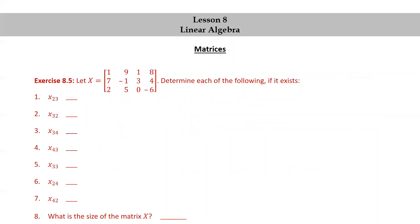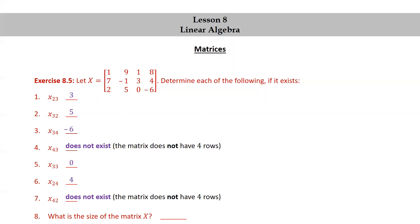Let's try an exercise. Let X = [1, 9, 1, 8; 7, -1, 3, 4; 2, 5, 0, -6]. Pause the video and determine each entry if it exists. X₂₃ = 3. X₃₂ = 5. X₃₄ = -6. X₄₃ does not exist — the matrix has only 3 rows. X₃₃ = 0. X₂₄ = 4. X₄₂ does not exist — again, the matrix has only 3 rows. The size of X is 3 by 4.